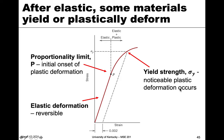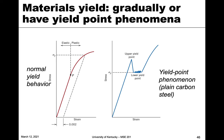Materials that yield have this yield strength and undergo plastic deformation — that's what we mean by yielding. Yielding means the material is now undergoing permanent, plastic deformation. These materials can undergo two types: the most common is the very gradual type, where it goes from linear and then very gradually transitions to non-linear behavior — we refer to that as gradual or normal yield behavior. The other type is far less common and is known as the yield point phenomenon, common in plain carbon steels.